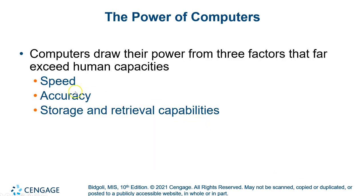Different generations, and three basic things: none of us can fathom the speed of computers anymore. The speed doesn't make any sense, and how accurate to the point zero, zero, zero, zero, so many decimals. And the amount of data we can store and retrieve.